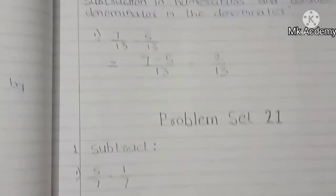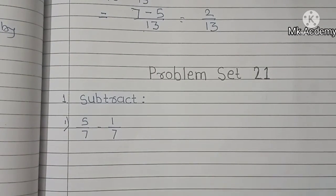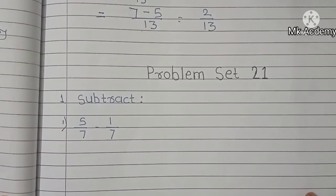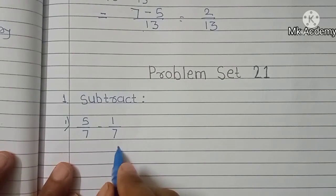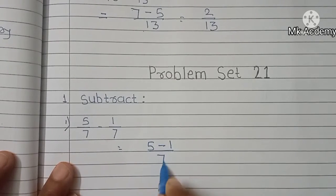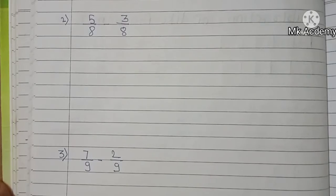Now we solve problem set 21. First question, example 1: 5 upon 7 minus 1 upon 7. 5 minus 1 upon 7 is equal to 4 upon 7. Example number 2: 5 upon 8 minus 3 upon 8.